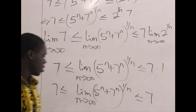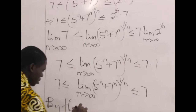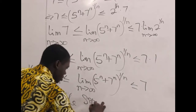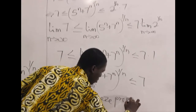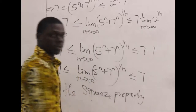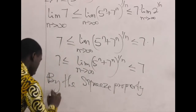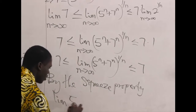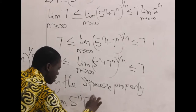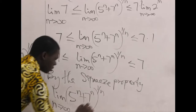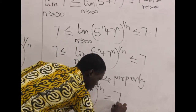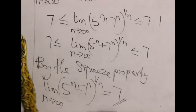So by the squeeze — that is, the sandwich property — of the limit of a sequence, since the limit on the left equals 7 and the limit on the right also equals 7, the limit of (5^n + 7^n)^(1/n) as n approaches infinity is equal to 7.